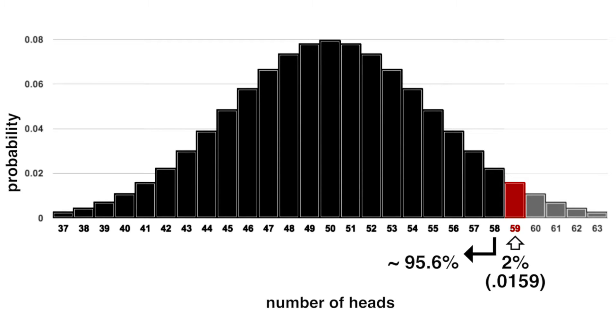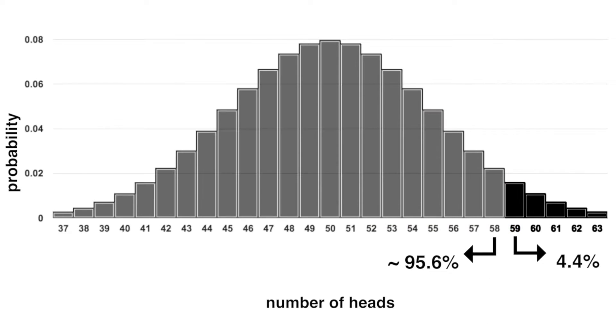There is a 95.6% chance of tossing 58 or fewer heads, and only a 4.4% chance of tossing 59 or more. This example also illustrates one subtlety of the definition of a p-value.